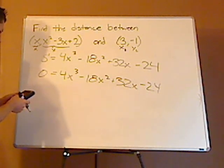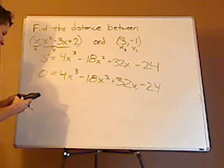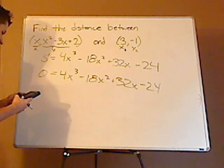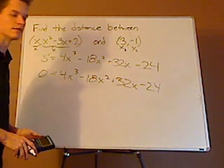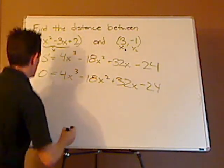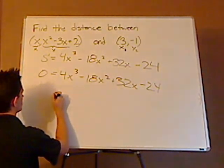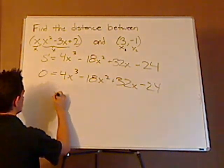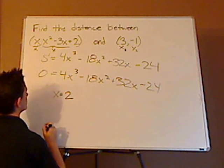So it doesn't look like it's anywhere else. If I zoom out... yeah, it only appears that there's a 0 at 2. And so there's going to be a minimum at x equals 2.